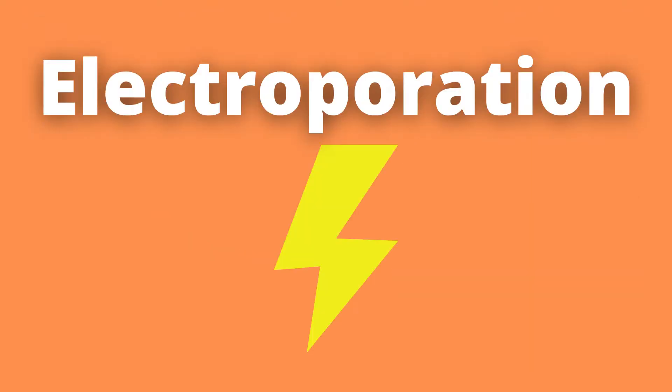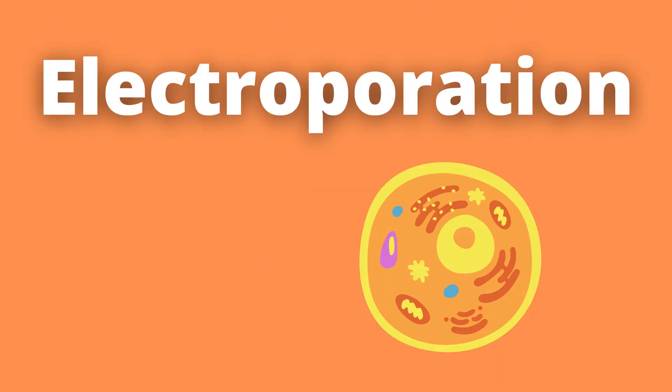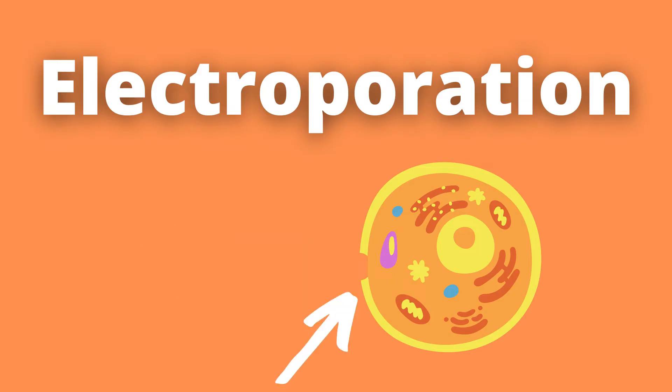In the case of electroporation, this is done with the help of an electrical pulse, which creates small temporary holes or pores in the phospholipid bilayer — or this part — i.e., the cell wall.